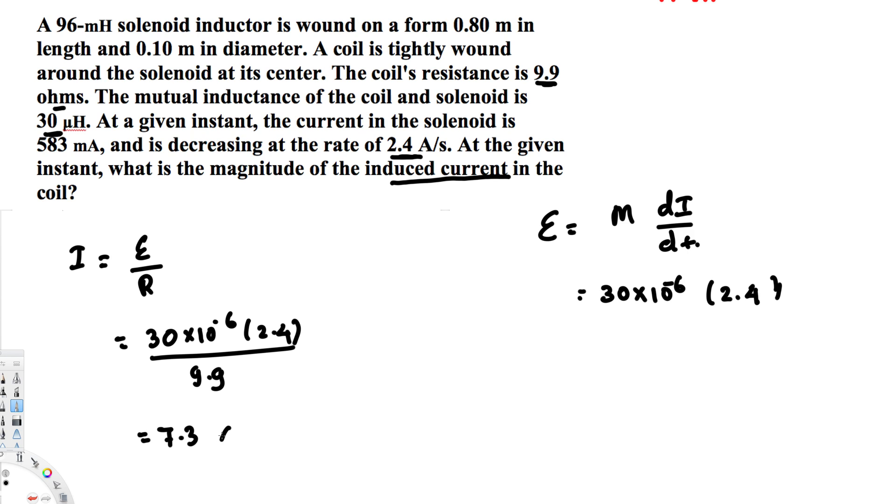.3 times 10 to the power of minus 6 ampere, and that's equal to 7.3 microamperes. And that's going to be our induced current. That's how we do this kind of problem. I hope this helps, thanks for watching.